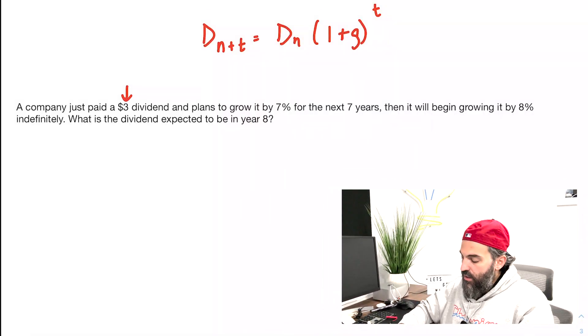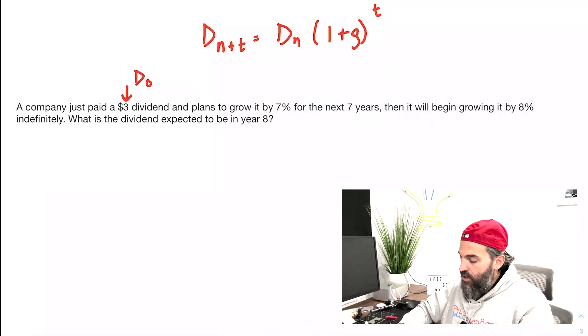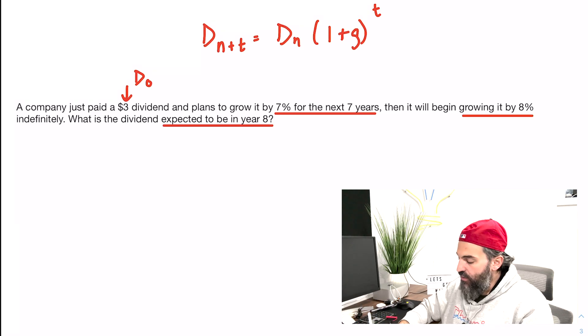So in this case, you're told that the company just paid a $3 dividend, so we would call that D0, and it's going to grow by 7% for the next seven years. Then it's going to grow by 8% indefinitely, and we've asked you to calculate D8, dividend in year 8.